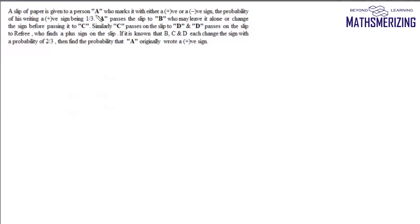A slip of paper is given to person A who marks it with either a positive or a negative sign. The probability of A writing a positive sign is 1/3. A passes the slip to B, who may leave it alone or change the sign before passing it to C. Similarly, C passes it to D, and D passes it to the referee who finds a plus sign on the slip. B, C, and D each change the sign with probability 2/3. Find the probability that A originally wrote a positive sign.